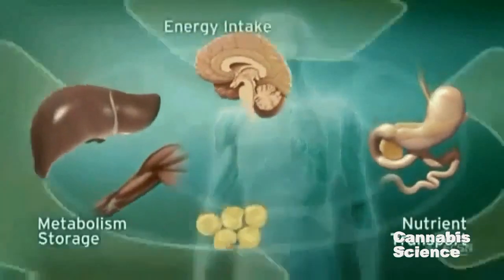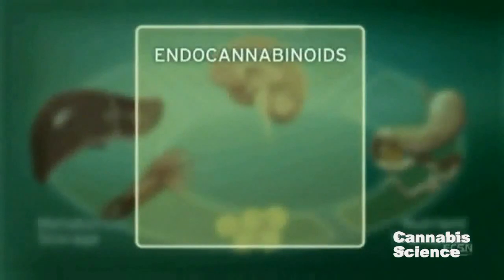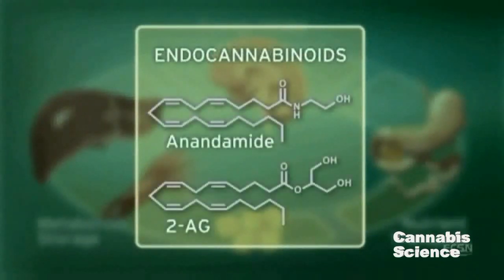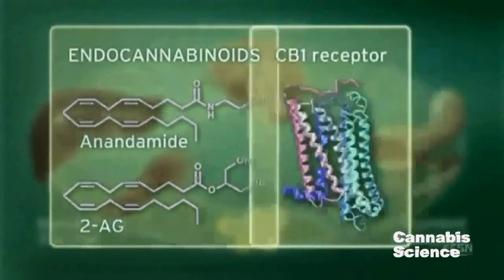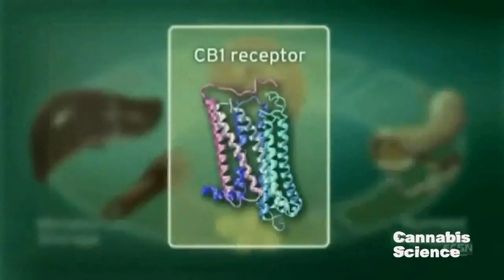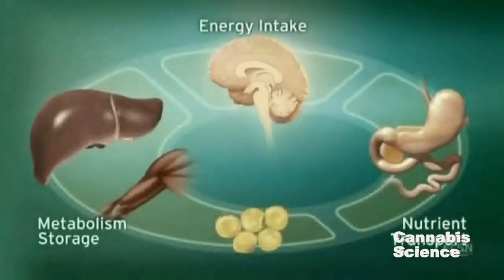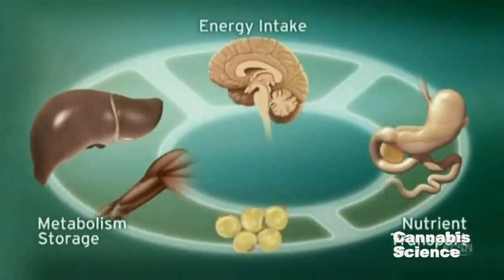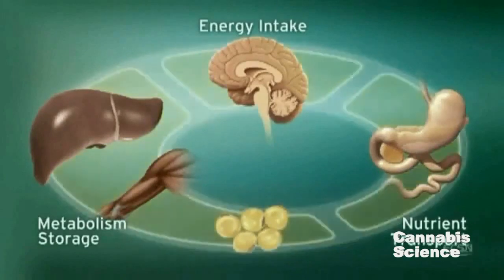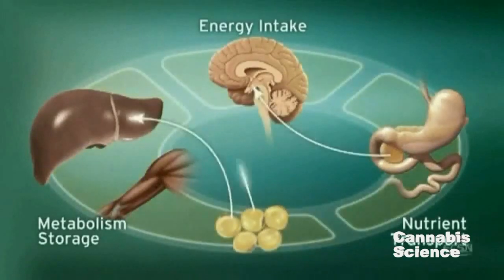The ECS regulates these processes through endogenous ligands, such as anandamide and 2-arachidonylglycerol, and the CB1 receptor. CB1 receptors are located in the brain, digestive tract, muscle, and adipose tissue. Integration of these central and peripheral ECS components is achieved through neuronal and hormonal signaling.